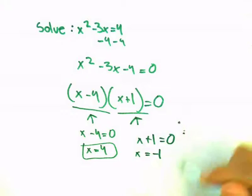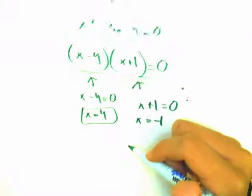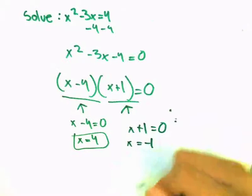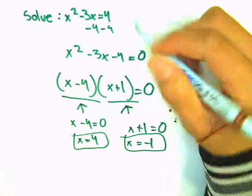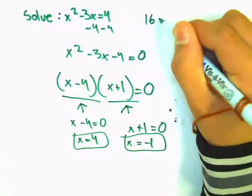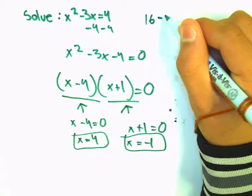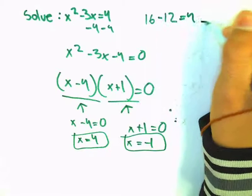Then you want to check this, see if it's right, and you just plug these numbers in to the equation. And 4 times 4 would be 16 minus 12 equals to 4, and that equals to 4.